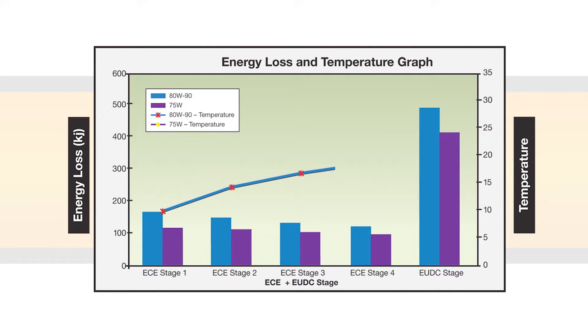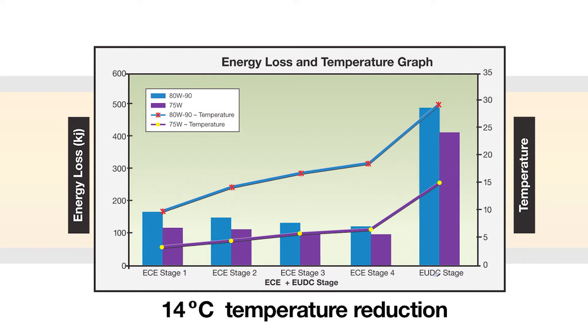For the operating temperatures, the chart shows the measured temperature at each stage of the ECE and EUDC cycles. The SAE 75W oil showed a temperature reduction of 14 degrees centigrade.